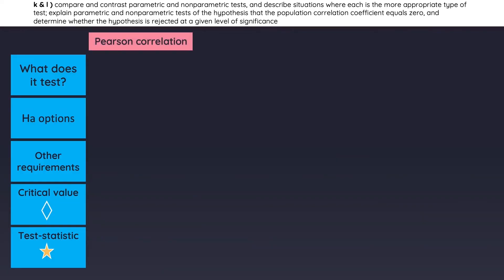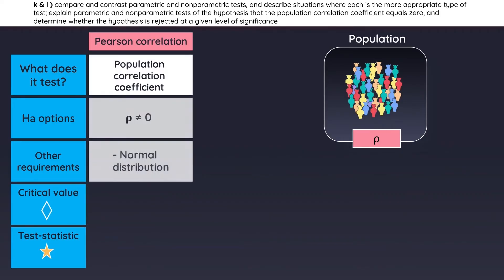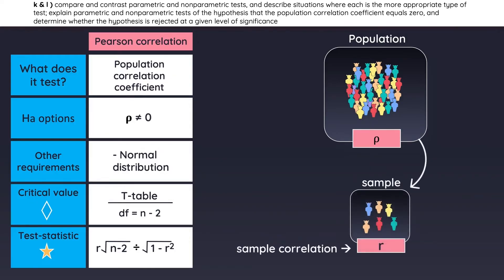The curriculum briefly covers the Pearson correlation test, which is used to make assumptions about a population's correlation coefficient. Here is the hypothesis, the test statistic, and the requirements for the critical value. Remember that the test statistic uses the sample correlation coefficient.